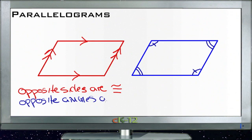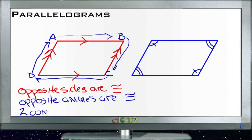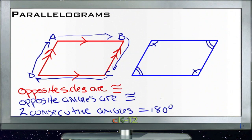Next we have the consecutive angles theorem. If we label these angles A, B, C, and D, any two angles that appear consecutively on the shape — A to B, B to C, C to D, and so on — any two consecutive angles are always supplementary, meaning they always equal 180 degrees. So if this angle is 96 degrees, then the consecutive angle would be 84 degrees, and that holds consistent for any parallelogram.